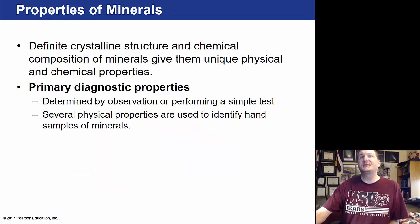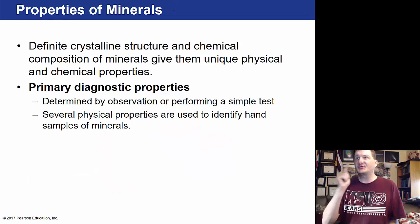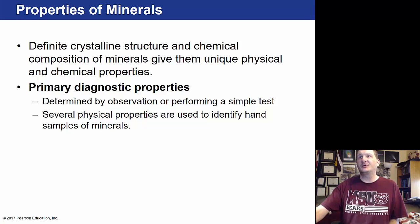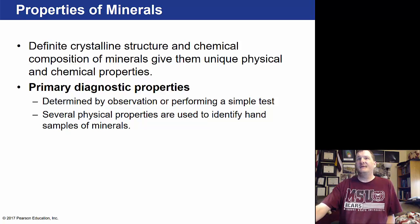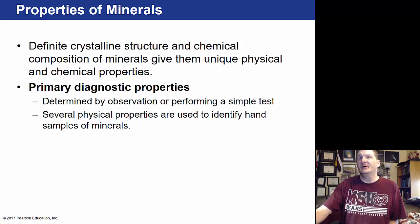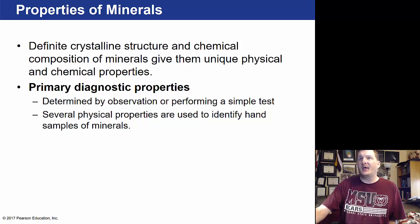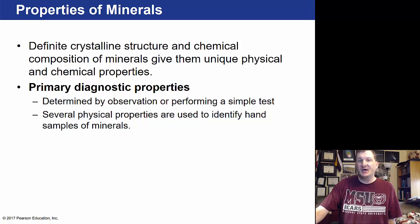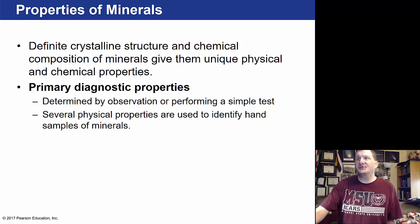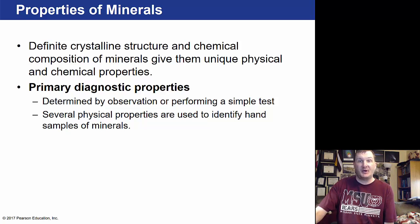Crystalline structure and chemical composition give minerals unique physical and chemical properties. The primary diagnostic of a mineral is determined by observation or performing a simple test, such as a hydrochloric acid test. Physical properties are also used to identify hand samples of minerals, which you'll likely do in your lab.